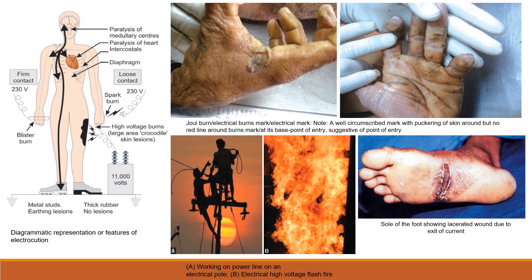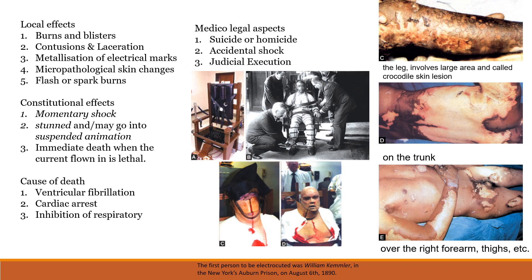When a person survives high voltage electrical contact, crocodile skin lesions can be observed. The current passing through the body gathers keratin protein over the skin layers and forms a design pattern resembling crocodile skin. One image labeled C shows the leg with a large-area crocodile skin lesion, which is essentially keratin protein fused into a pattern due to the electricity passing through.